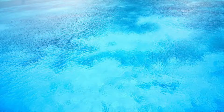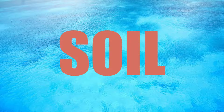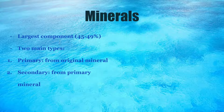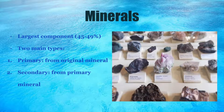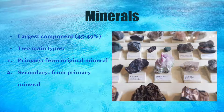Step 3: Prepare soil. Soil is arguably one of the most important factors in vegetable production. Soil has five main components. First up, we have minerals. Minerals are the largest component, making up 45 to 49 percent of the soil's volume, and have two primary types: primary, derived from the original material, and secondary, derived from primary minerals.